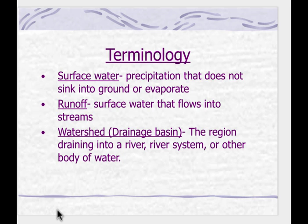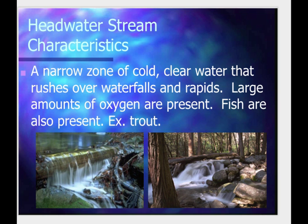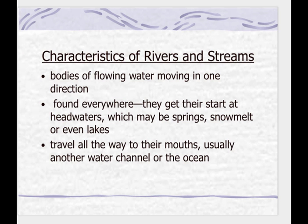Most streams have rapidly flowing water. The first type is a headwater stream — these are turbulent, shallow, and cold. They dissolve large amounts of oxygen, and the water tastes really good. You have large amounts of oxygen present and fish such as trout.